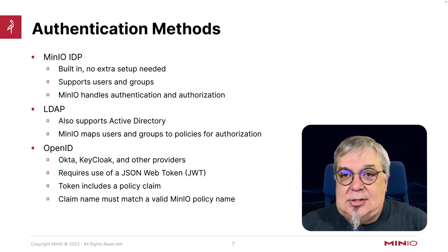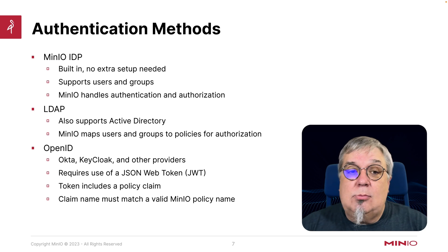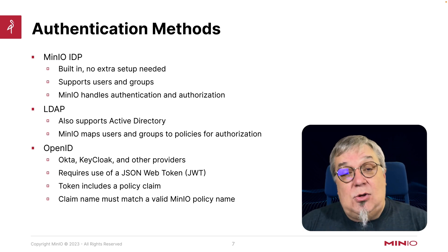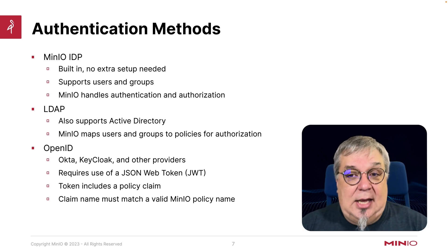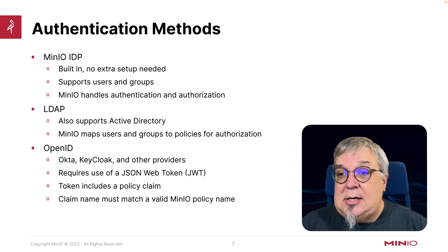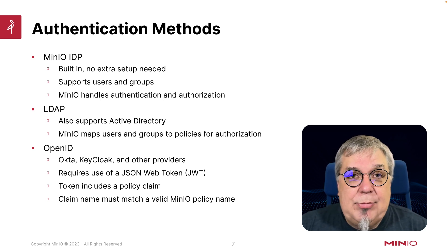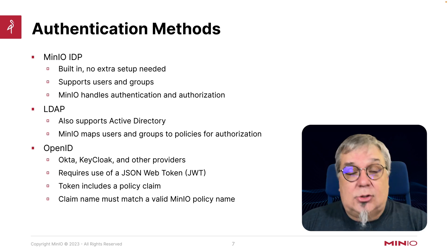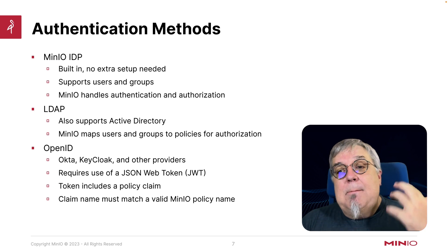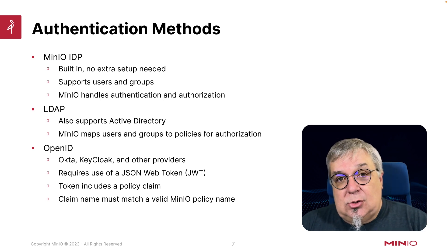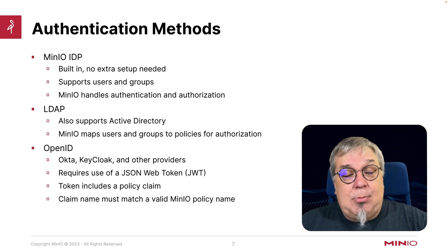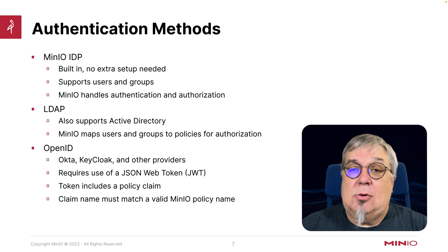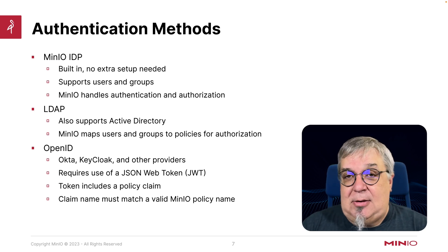The downside is that you have to set up a whole other set of users and groups. If you already have a system in place, such as LDAP or OpenID, you can use those as well. In the case of LDAP — and that also includes Active Directory — MinIO is going to map users and groups in LDAP or Active Directory to policies for the authorization, so MinIO is still handling that mapping for you.